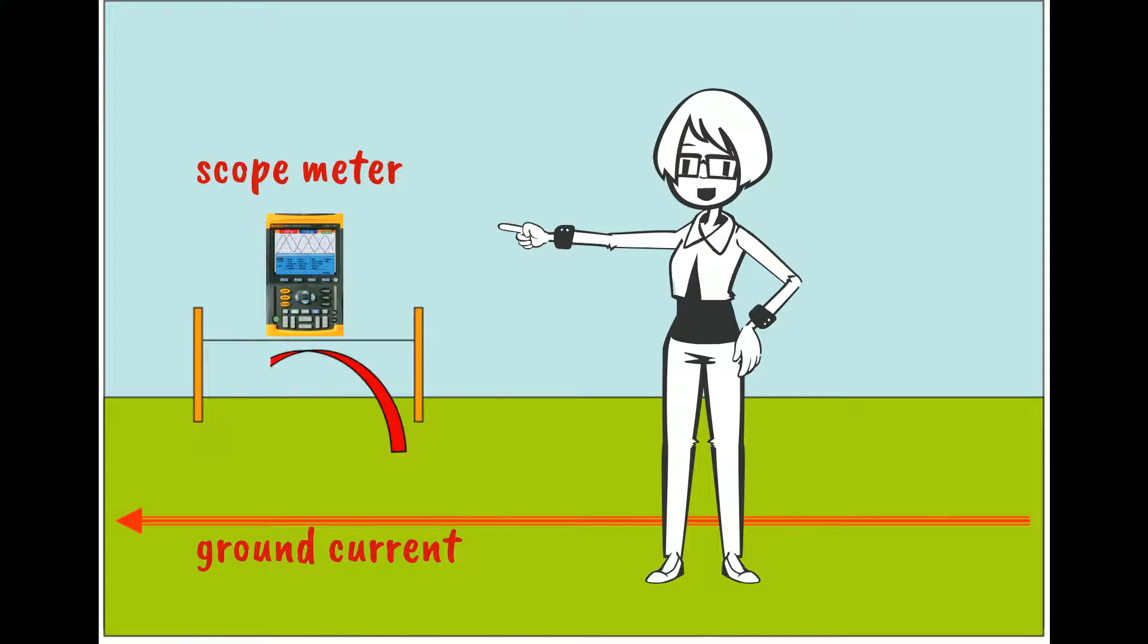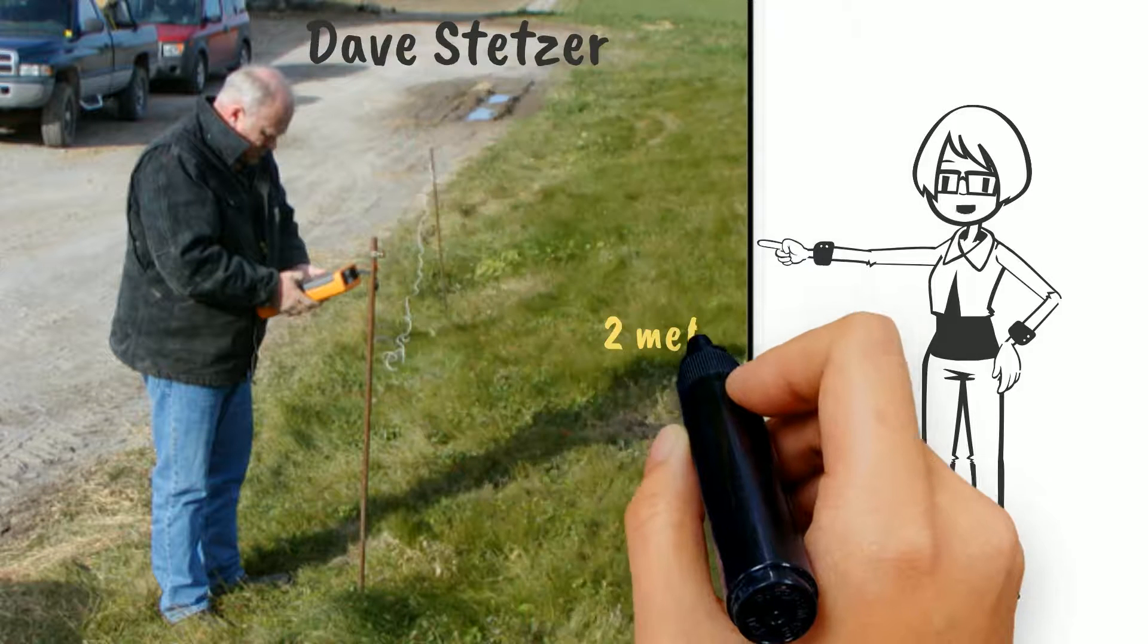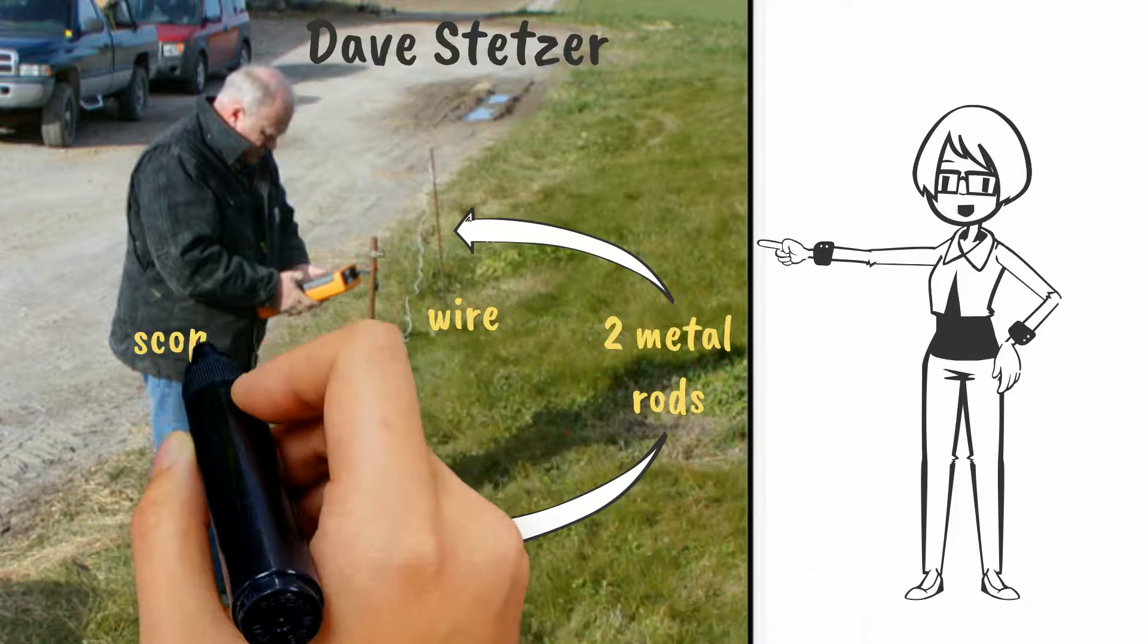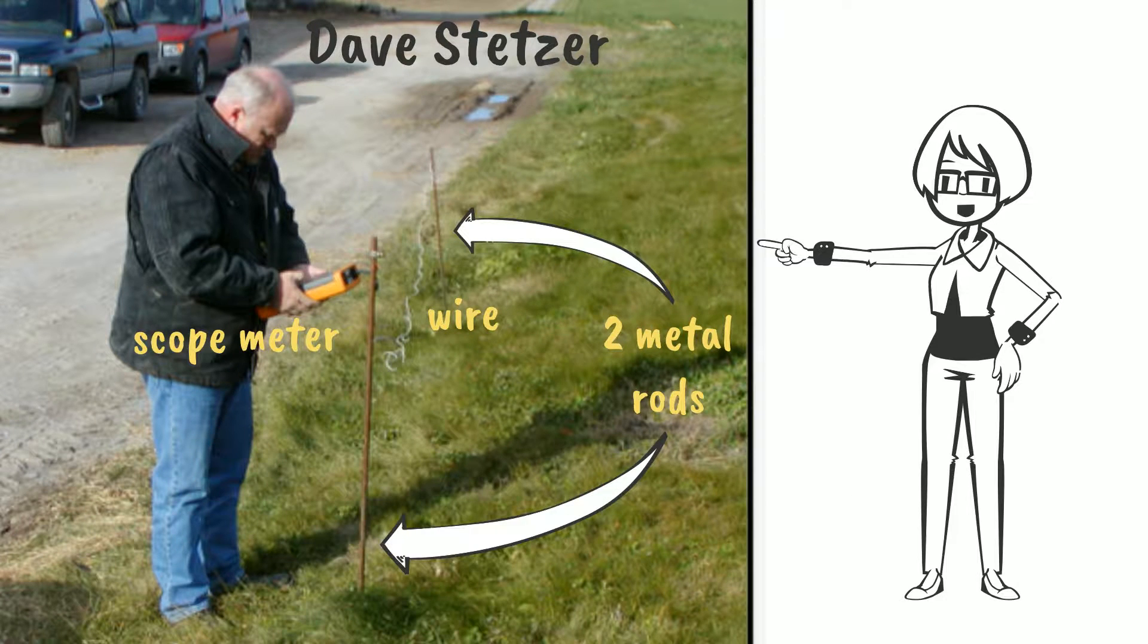This meter records the electricity flowing between the two rods. This is Dave Stetzer, a power quality expert from Wisconsin. He's measuring ground current on a farm in Ontario.